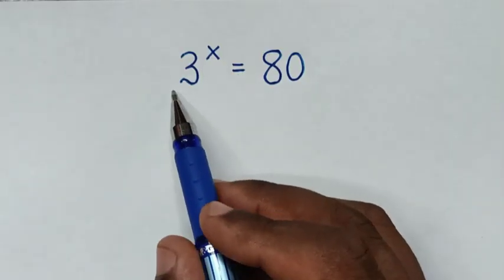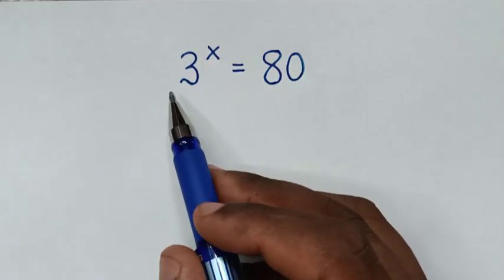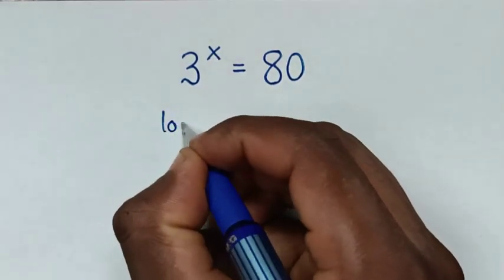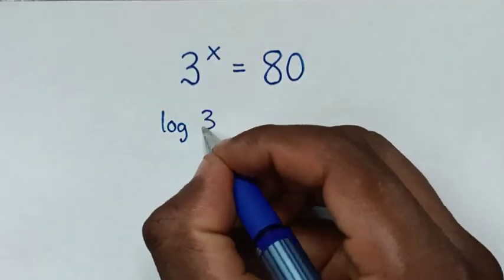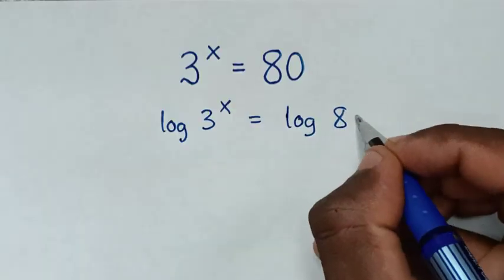To find the value of x from this equation, in the first step, we'll apply log to both sides. So it will be log of 3 power of x is equal to log of 80.